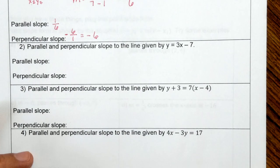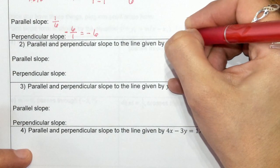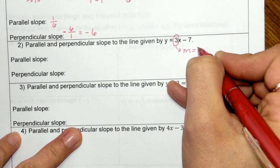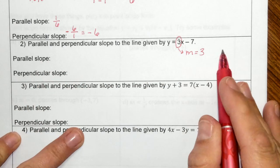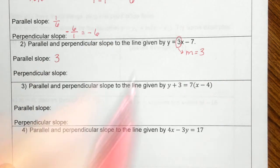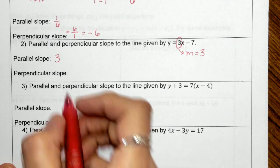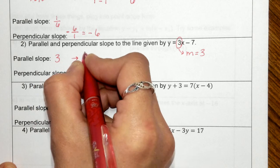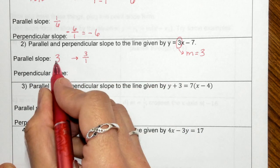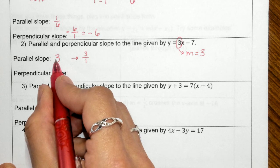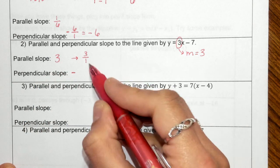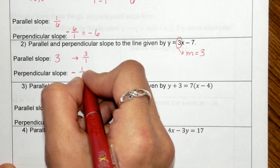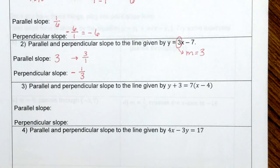Let's take a look at number 2. We're given the slope because we have Y equals MX plus B. M is the slope, so M is 3. Parallel, we use the exact same slope, so the parallel slope is 3. With your perpendicular slope, this 3 is actually 3 over 1. We have to change the sign, opposite means change the sign, so we go from positive to negative. Reciprocal means flip these, so 1 goes on top, the 3 goes on bottom. Negative 1 third.